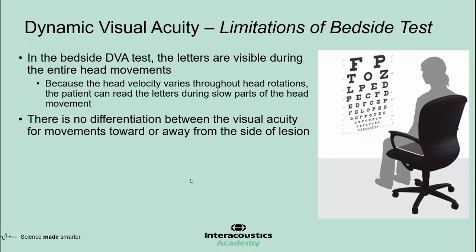There are a few limitations associated with the bedside DVA test. One major limitation is that the letters are visible during the entire head movement, so the patient can try to read them during the slower parts of head rotation. The other limitation is that the bedside test does not differentiate between visual acuity for movements toward or away from the side of lesion, even though there is a meaningful difference for patients with unilateral vestibular loss.